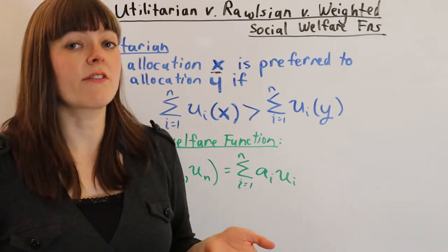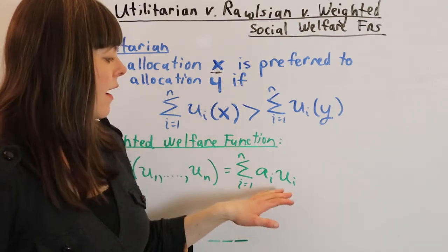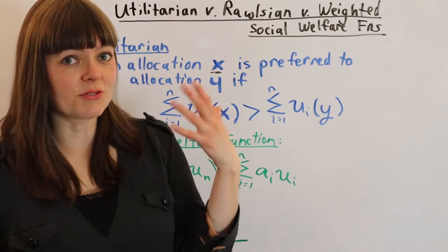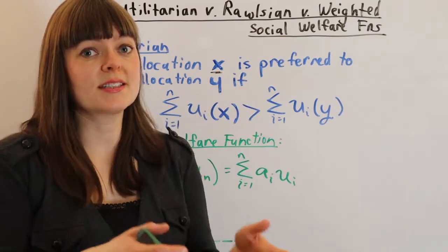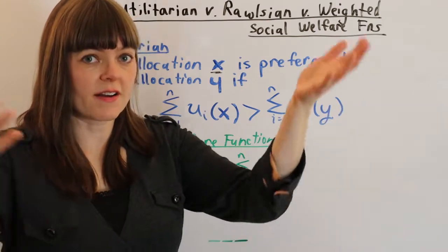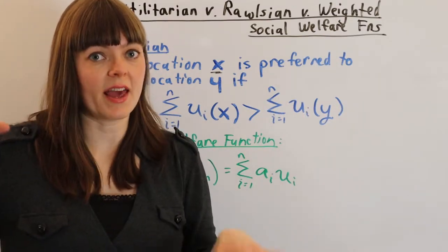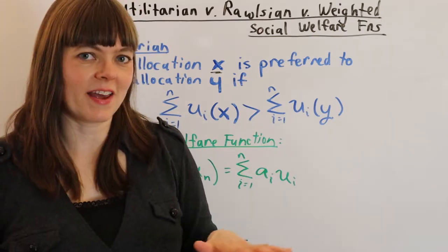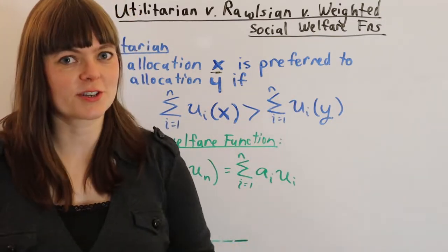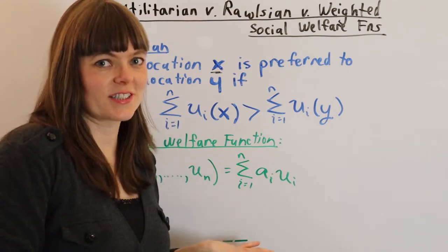If you like that idea of placing a higher utility weight on the person who's least well off in order to try to improve the equity in the roommate situation, then you might be a fan of our next social welfare function, which is the Rawlsian one. So let's look at that.